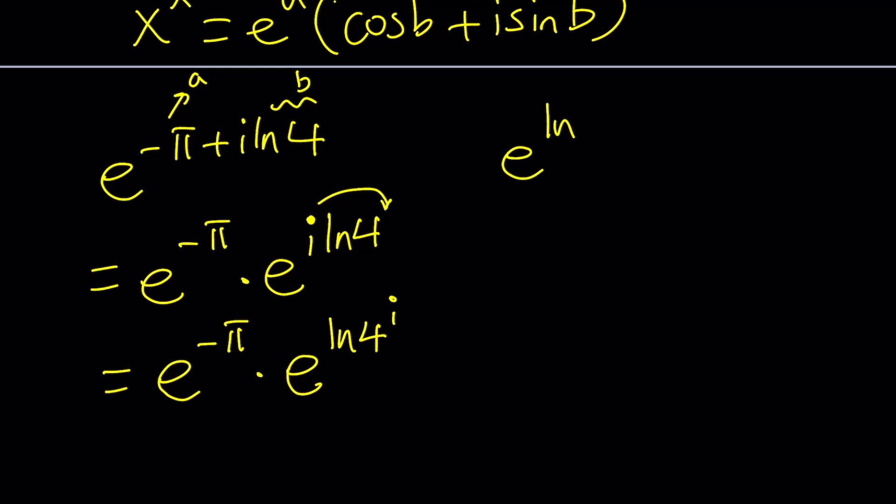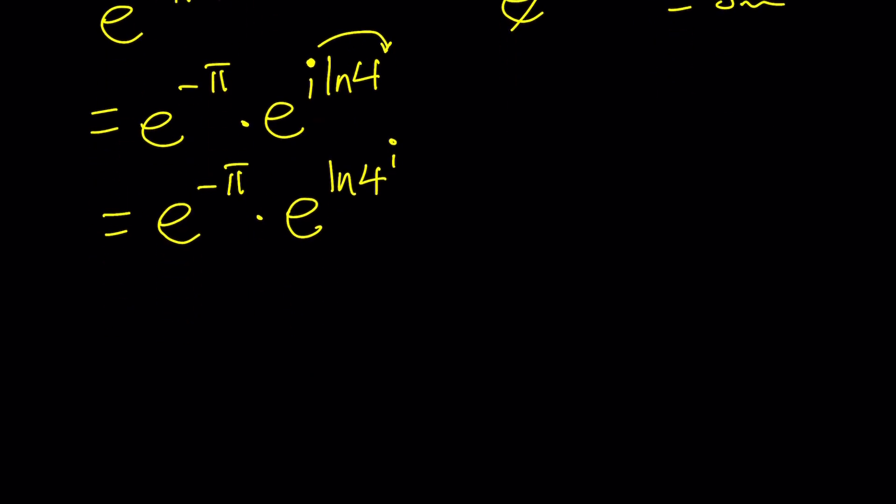Now, e to the power ln something, as you know, is something. So it's like e to the power ln something is something. So, in other words, these two kind of cancel out. This gives us the following. And let's go ahead and write this first: 4 to the power i, because this is our something, times e to the power negative pi. So far, this is what x to the power x equals. But I'm going to manipulate this a little bit and then eventually set it equal to x to the power x.